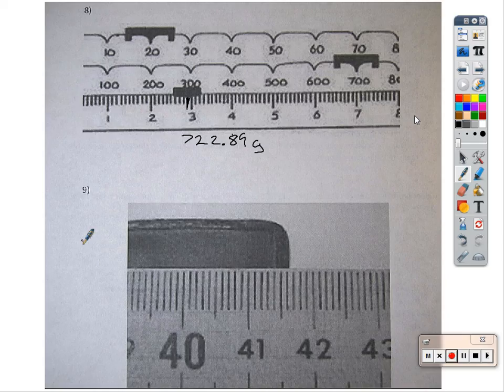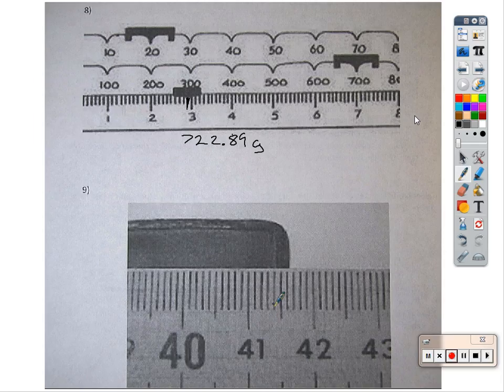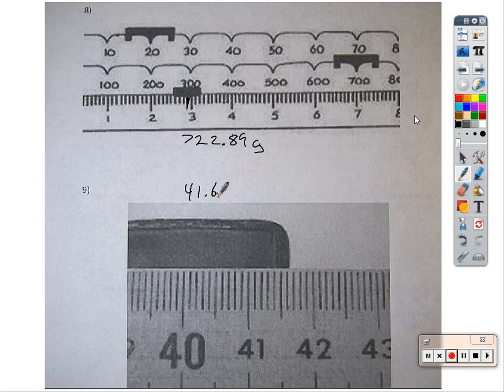The scale is the same on the meter stick. This is 41, .1, .2, .3, .4, .5, .6. We know it's 41.6 something.